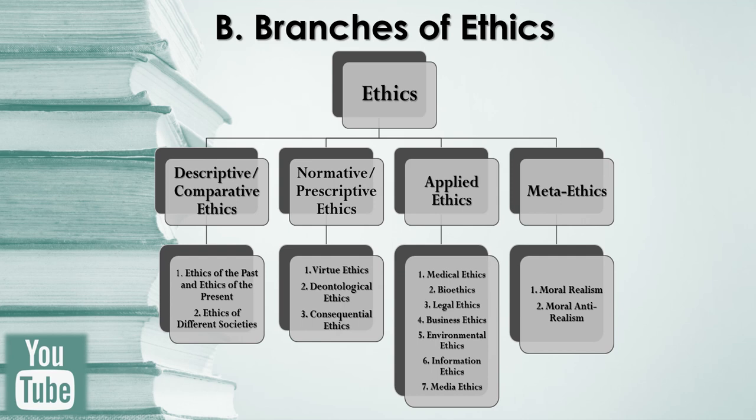The next branch, which is the focus of this presentation, is called normative or prescriptive ethics. It deals with norms or a set of considerations by which one should act. It is also called prescriptive because it prescribes the theories and principles by which we determine whether an action is right or wrong. Under this branch there are three categories: virtue ethics, deontological ethics, and consequential ethics. We will discuss each of them and their respective representatives in a while.